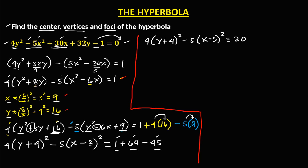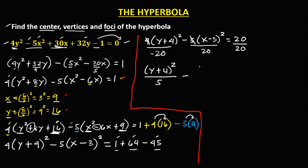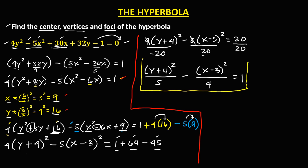Take note that for the equation of the hyperbola, it must always equal 1. So we divide everything by 20. We can cancel the 4, giving (y plus 4) squared over 5, and cancel the 5, giving (x minus 3) squared over 4, then equals 1. This is now the standard equation of this hyperbola.